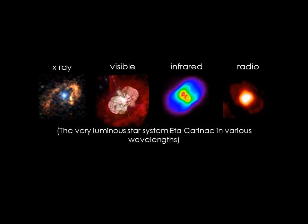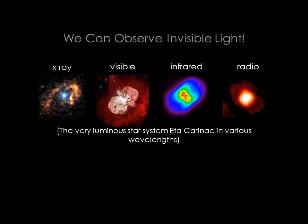Even though we can't see radio waves or X-rays or gamma rays with our eyes, astronomers are still able to detect objects that emit these forms of light with specialized instrumentation. We'll stop here for now. I will talk to you again soon.